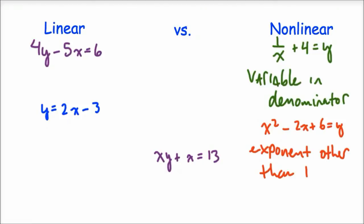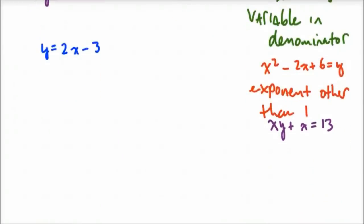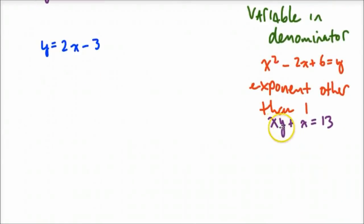And this last one here, x times y plus x equals 13. We have that. That's going to be nonlinear as well. And the reason for that is we have this operation here, multiplication, by the other variable instead of just by a constant. So here we know it's nonlinear because the variables are multiplied together.